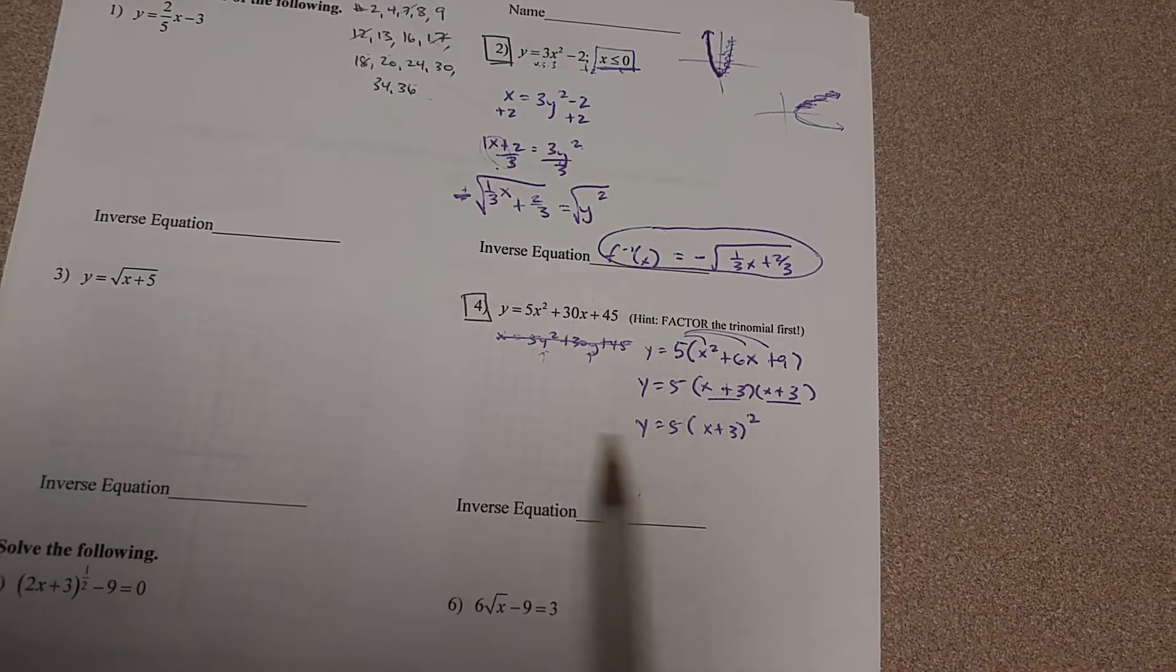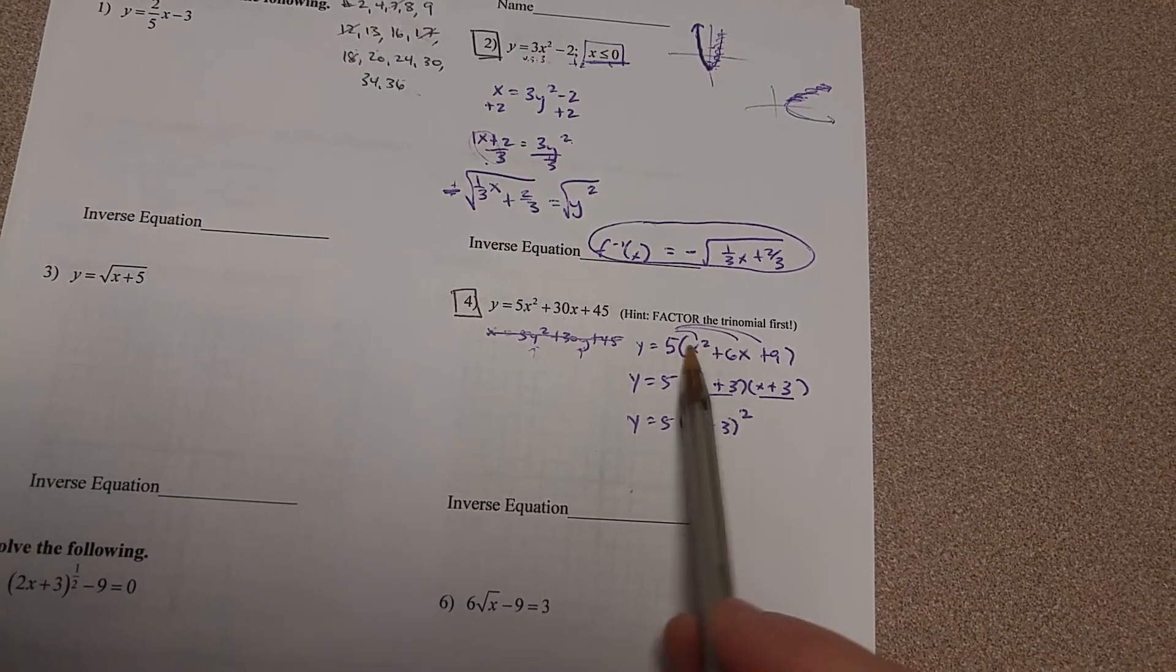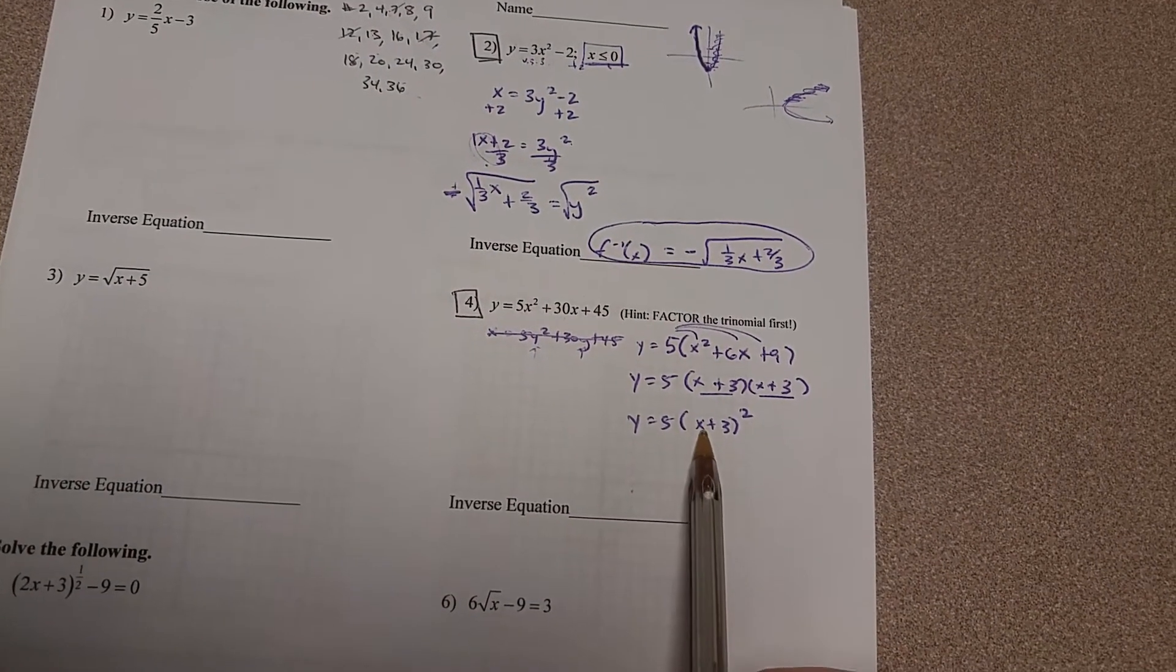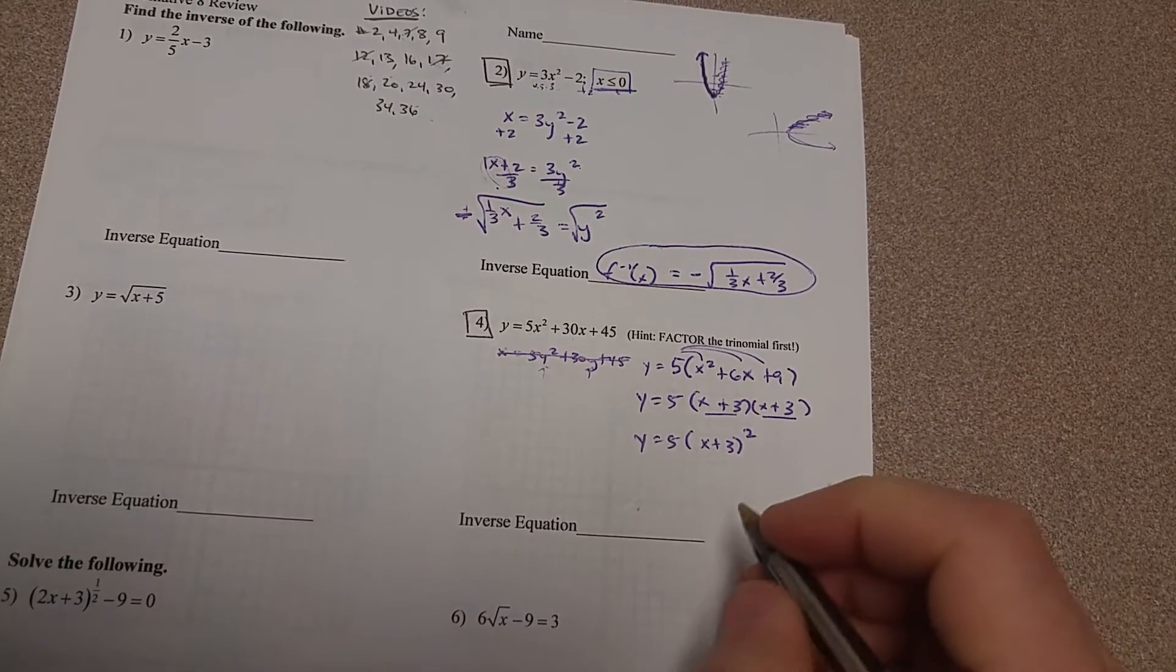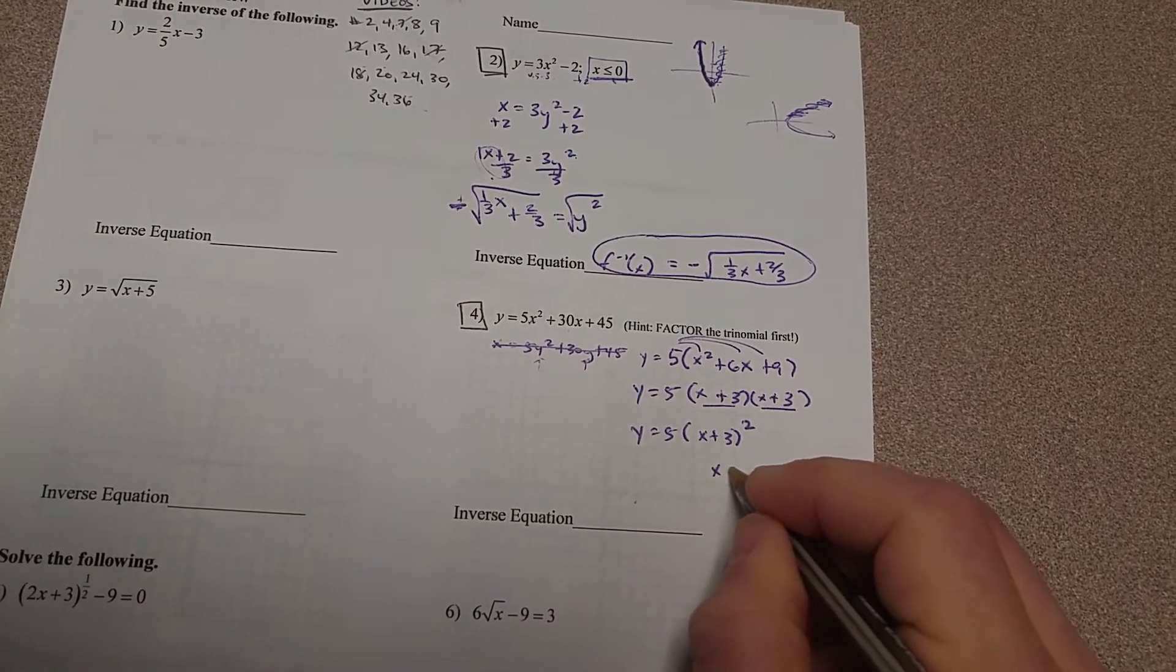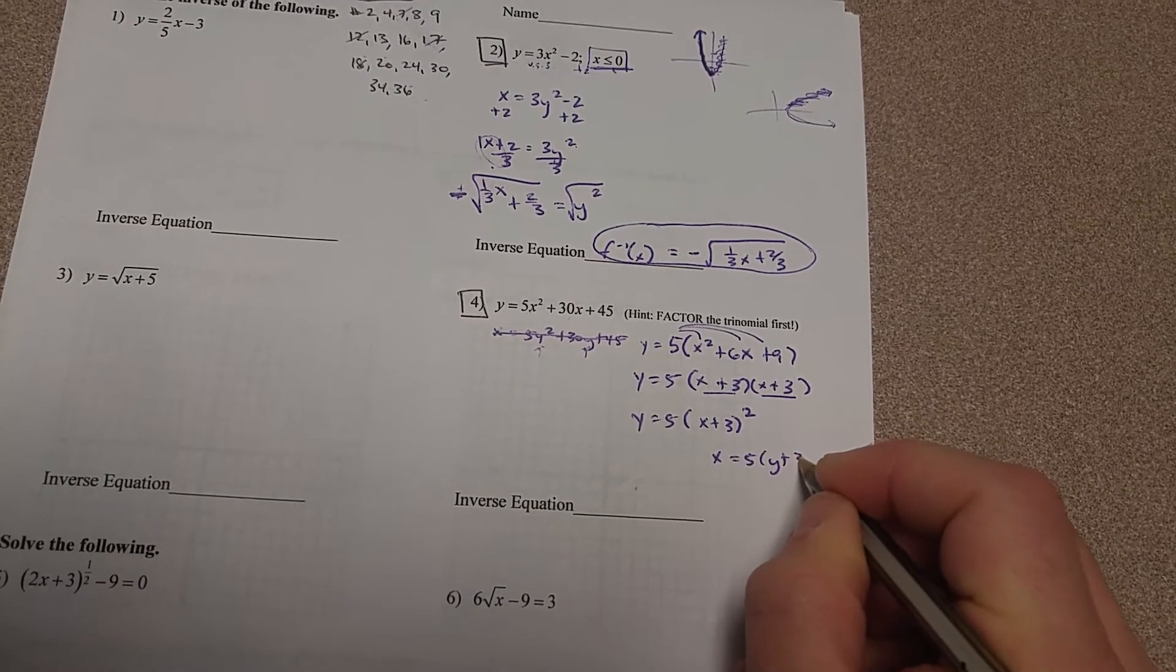And now this is helpful because I went from having x squared and x to just having one x in the problem now. So now when I switch x and y, I'm going to be able to solve it a lot easier. So I'm going to go ahead and switch x and y. So x equals 5y plus 3 squared.